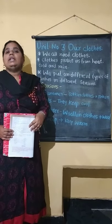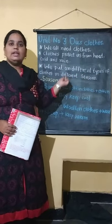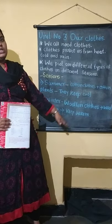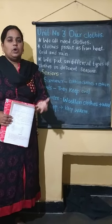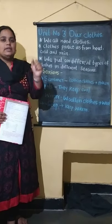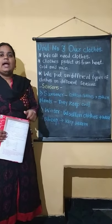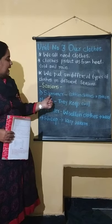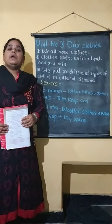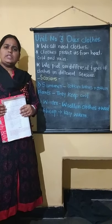Now, according to the season, as I told you, in different seasons we wear different types of clothes. As everyone knows, we have three seasons. Which are those? Summer, winter and rainy. Out of these, the first season we will learn is the summer season. In summer season, we mostly wear cotton clothes.